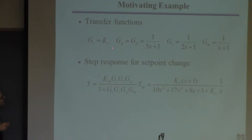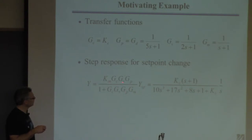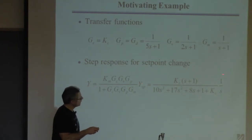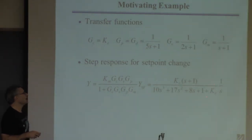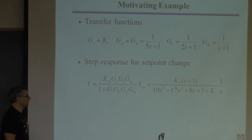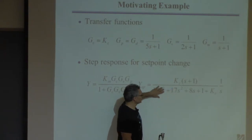Here's a little toy example. I give you some transfer functions. This is the closed-loop transfer function for set point changes. I'm specifying all the components — process, disturbance, valve, measurement device — except the controller, which I'll say is a proportional controller, but I'm not telling you what KC is. I assume a unit step input of 1/S. You plug everything in and simplify to get a ratio. The question is: for what values of KC is this stable?